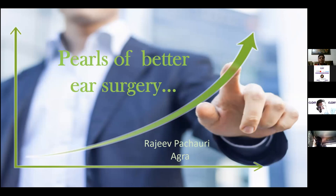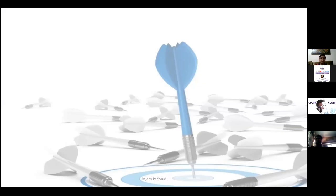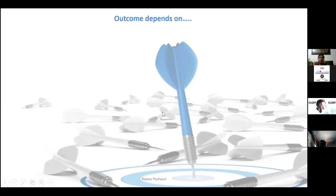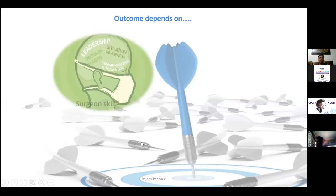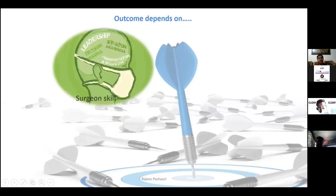The topic is the pulse of better ear surgery. We'll have almost an hour to discuss it, then share our views and take questions. I will try to finish as fast as possible — we have almost 60 to 70 slides — covering all aspects. What exactly determines the outcome of ear surgery? It depends on two factors: the surgeon's skill, including training, academic knowledge, theoretical knowledge, and awareness of the subject.